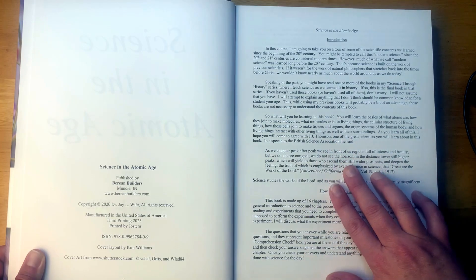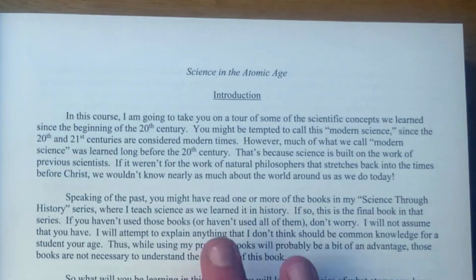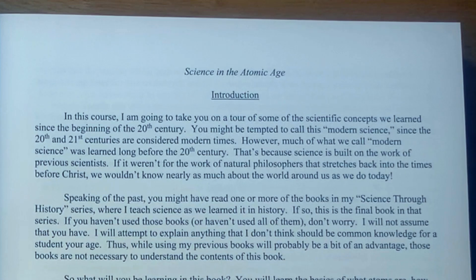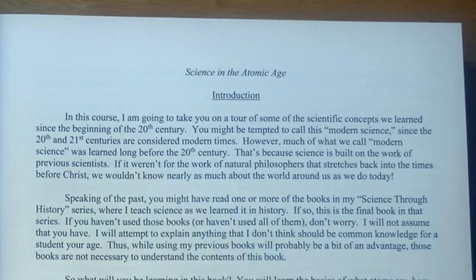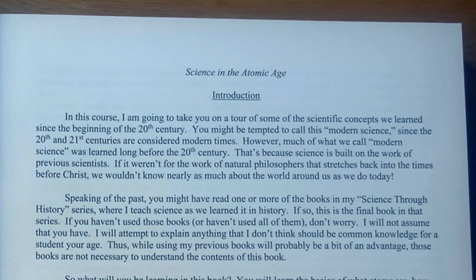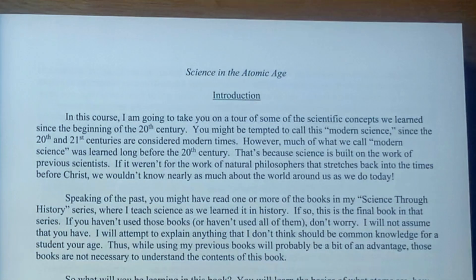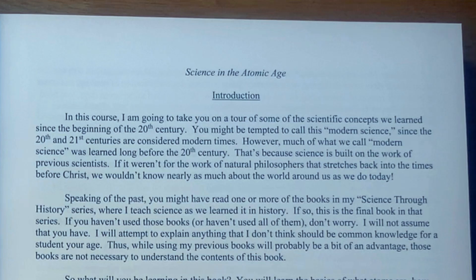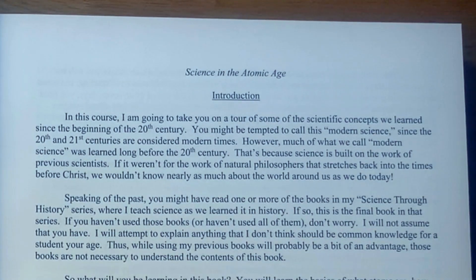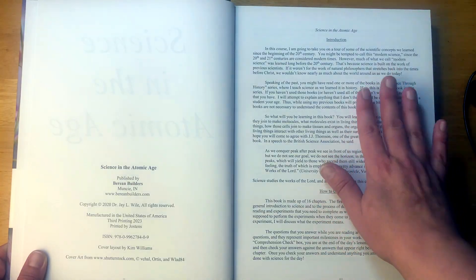So we have the introduction here. We're going to take a tour of some of the scientific concepts we learned since the beginning of the 20th century. It says you might be tempted to call this modern science since the 20th and 21st centuries are considered modern times. However, much of what we call modern science was learned long before the 20th century. That's because science is built on the work of previous scientists. If it weren't for the work of natural philosophers that stretched back into times before Christ, we wouldn't know nearly as much about the world around us as we do today.